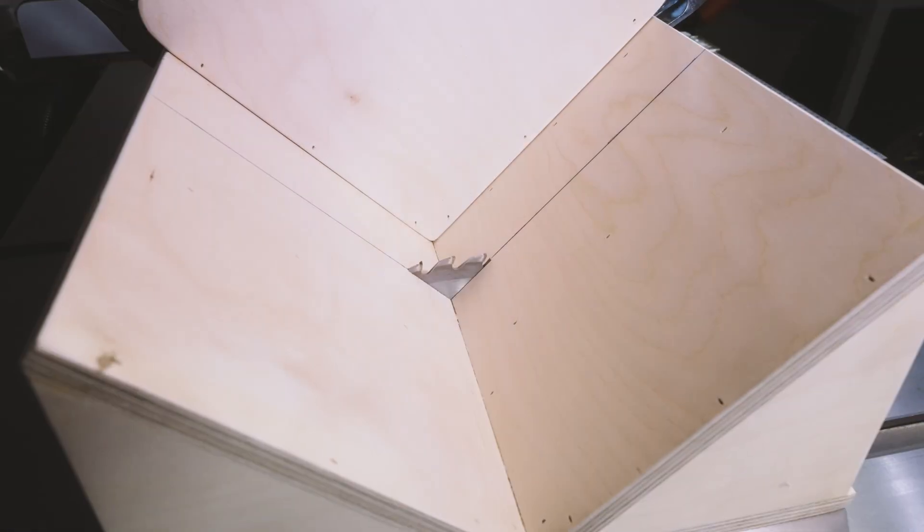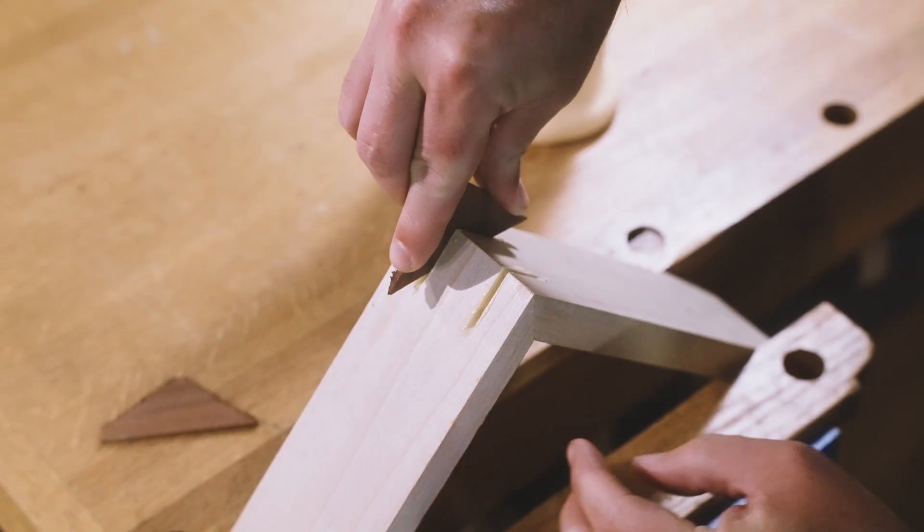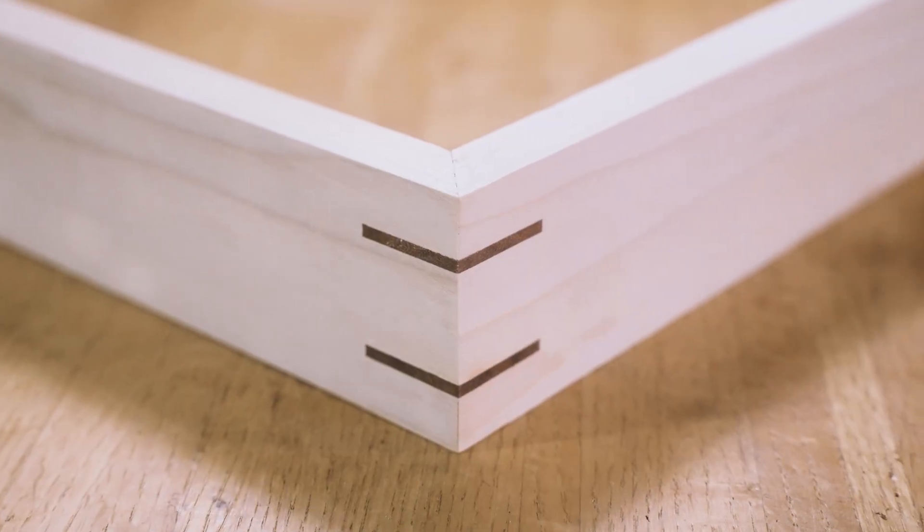Let's build this miter key jig on the saw stop. It'll make it easy to cut the slots for these miter keys, which can reinforce your joinery and add a decorative touch.